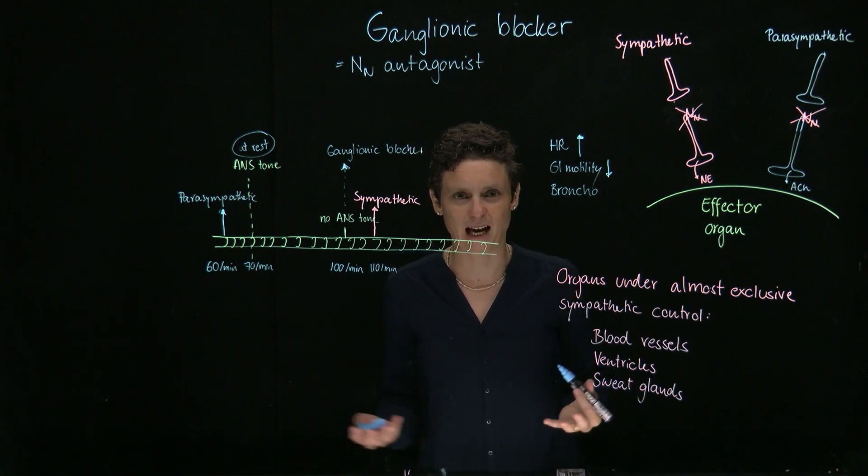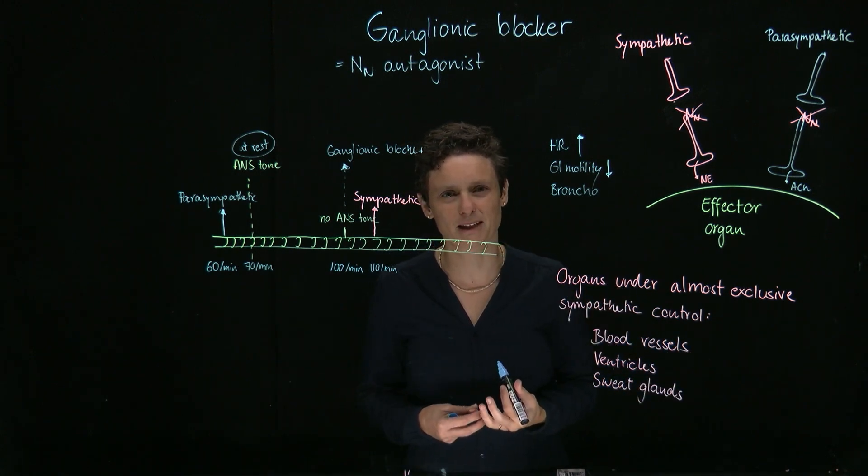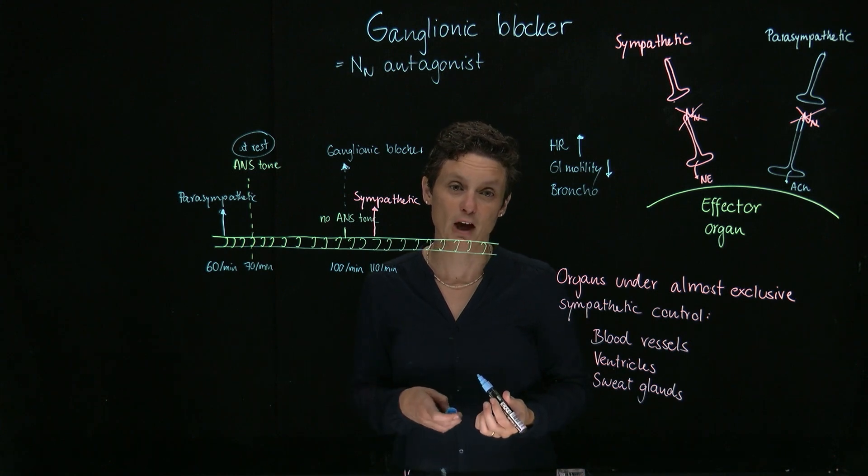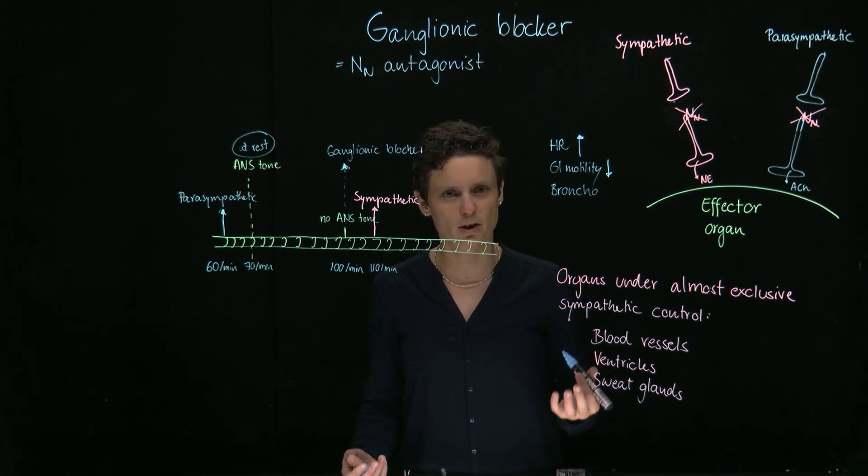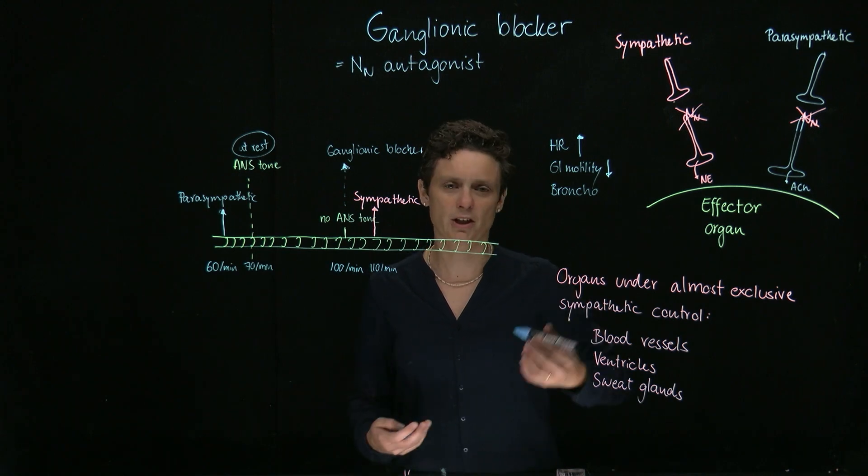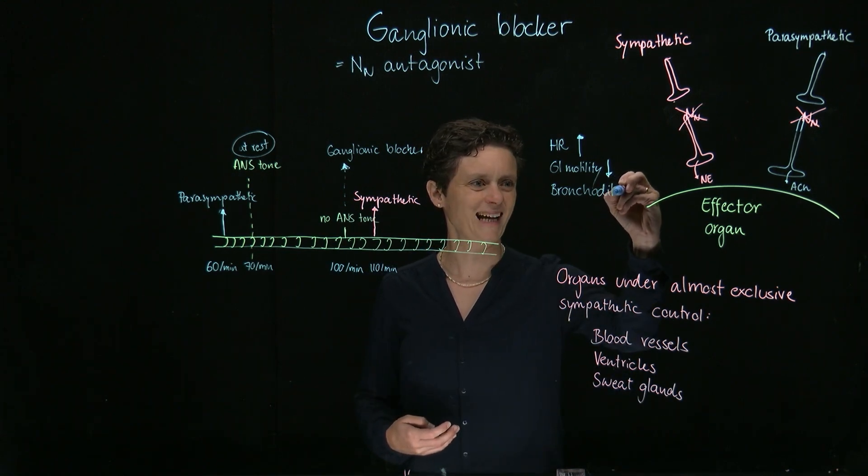A decreased tone of GI motility, which can lead, as a side effect, to constipation. And that's exactly what we're going to see with ganglionic blockers. What's going to happen to our bronchi? Well, the parasympathetic tone is bronchoconstriction, so now the opposite, we're going to get bronchodilation.